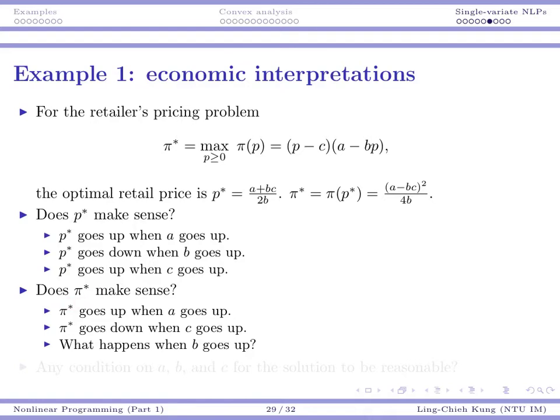For pi star, we may also do the same thing. We can see that when a goes up, pi star is going to go up, but when c goes up, pi star is going to go down. Why? Mathematically, you can verify it, but economically, when a goes up, more people like your product, so you can earn more money. When c goes up, the cost becomes higher, and if the demand side does not change, you can earn just little money.